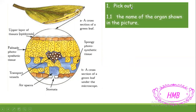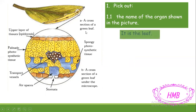First, pick out from the picture the name of the organ shown. As you can see, the answer is the leaf — it's a green leaf.